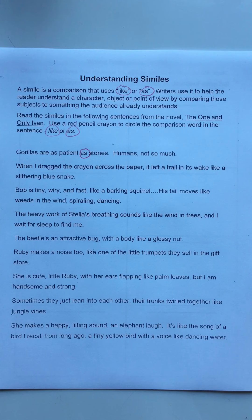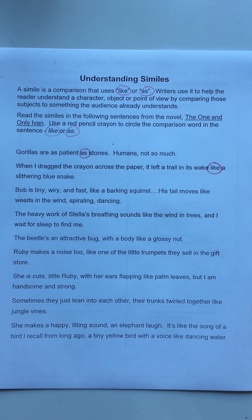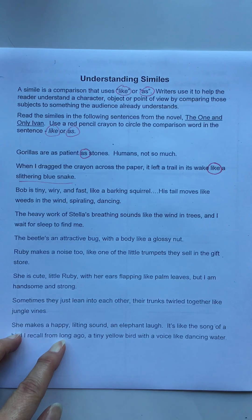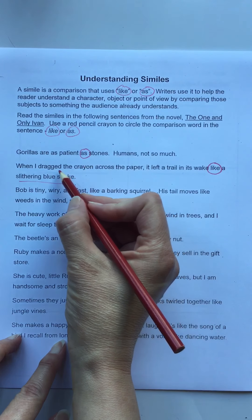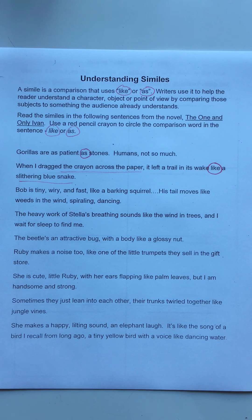The next sentence from 'The One and Only Ivan': 'When I dragged the crayon across the paper, it left a trail in its wake like a slithering blue snake.' Did you hear the comparison word 'like'? A slithering blue snake is being compared to the crayon being dragged across the paper. In this story, Ivan is a gorilla who is an artist, and when he pulls his blue crayon across the paper it looks like a slithering blue snake. If you can picture a slithering blue snake, you can see what Ivan's drawings would look like.